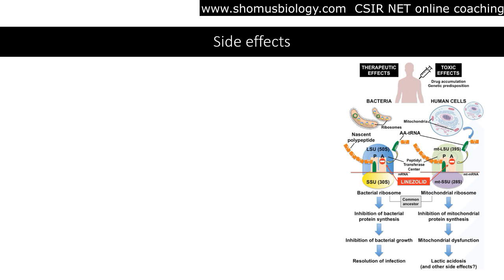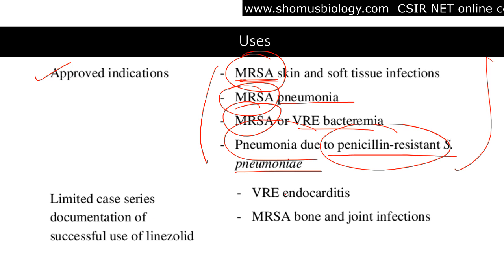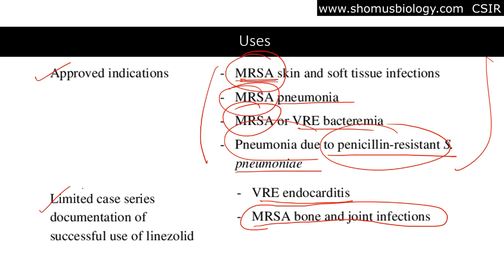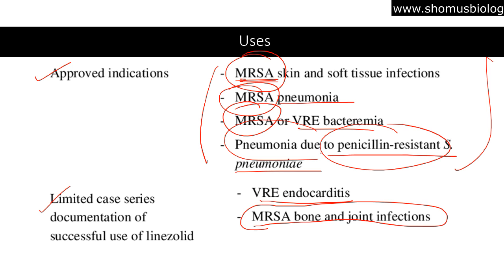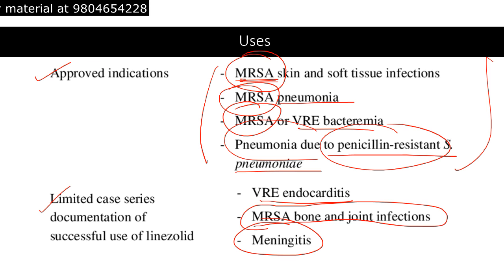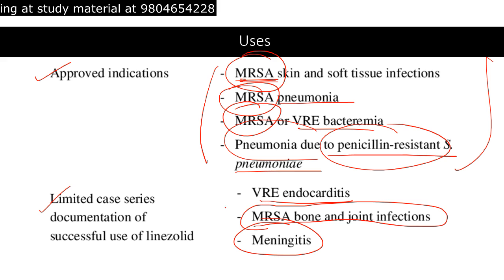Under limited case scenarios, Linezolid is used for VRE endocarditis and MRSA bone and joint infections. Meningitis is also under limited case series, requiring proper documentation and specific critical circumstances. We don't use Linezolid for general simple infections — it is reserved only for life-threatening conditions where other antibiotics will not work at all.